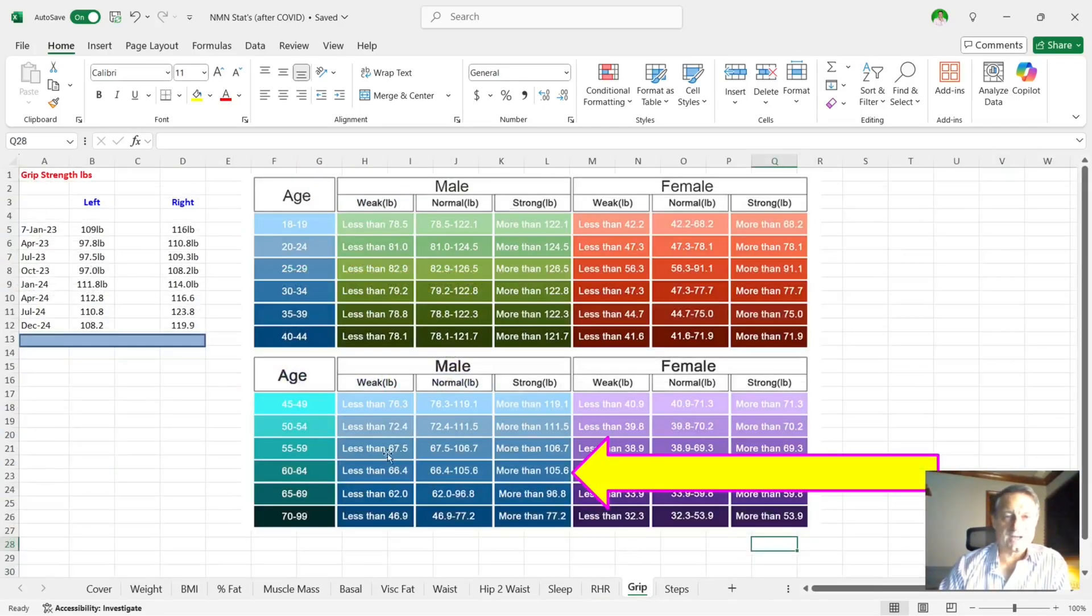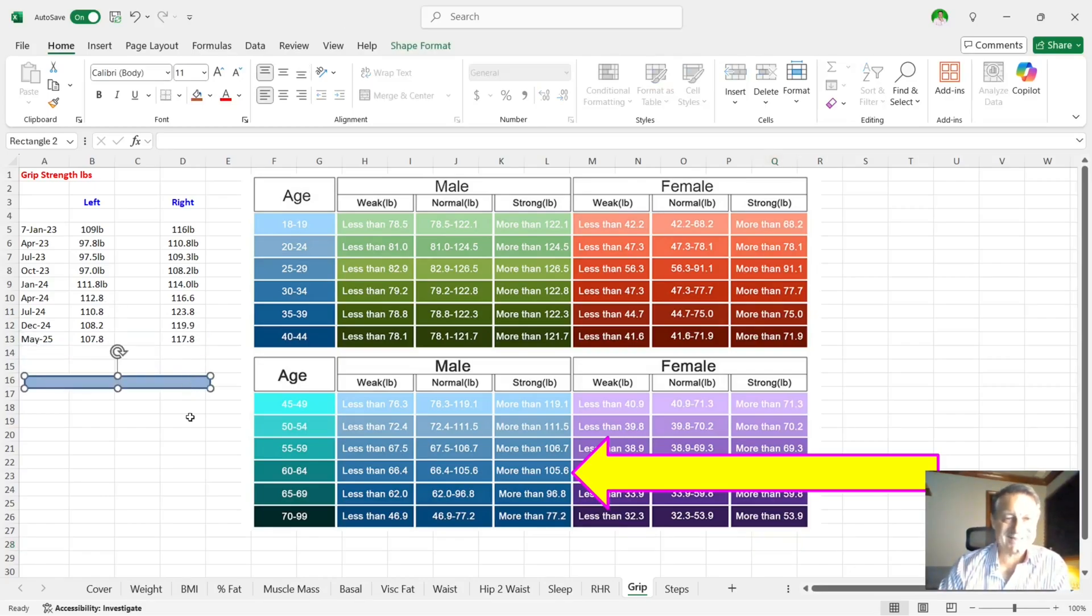The next one is my grip strength. You can see in December, my left hand was 108.2 pounds and my right hand was 119.9 pounds. This time, slightly down: 107.8 pounds grip for my left hand and 117.8 for my right hand. When you look at those scores for someone who's aged between 60 and 64, I'm still in the strong category, so I'm more than happy with that.